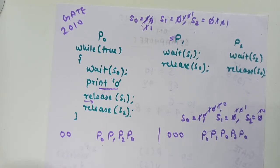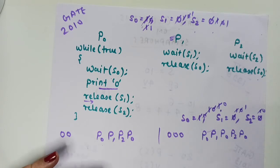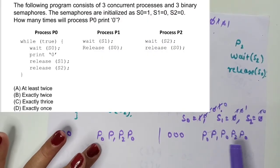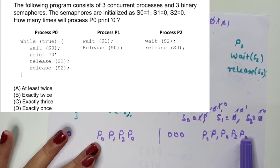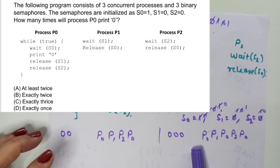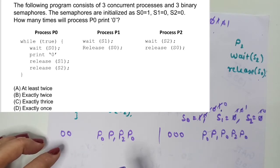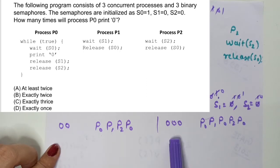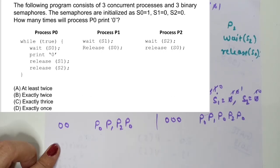After P2 releases S0, P0 is executed again — wait on S0 succeeds, and it prints 0 one more time, then releases S1 and S2. But P1 and P2 have already terminated. Counting the prints: 2 times in the first order, 3 times in this second order. So we can get at least 2 and also 3 times.